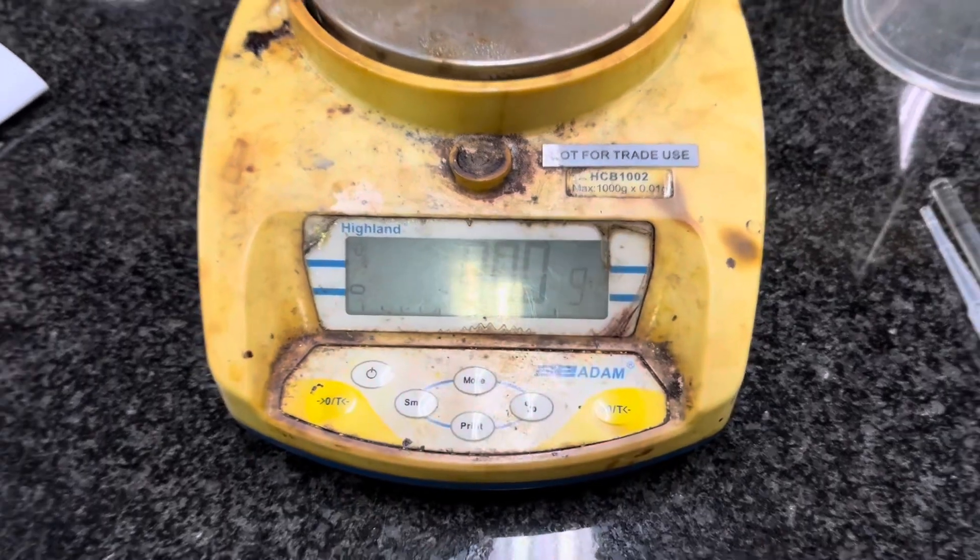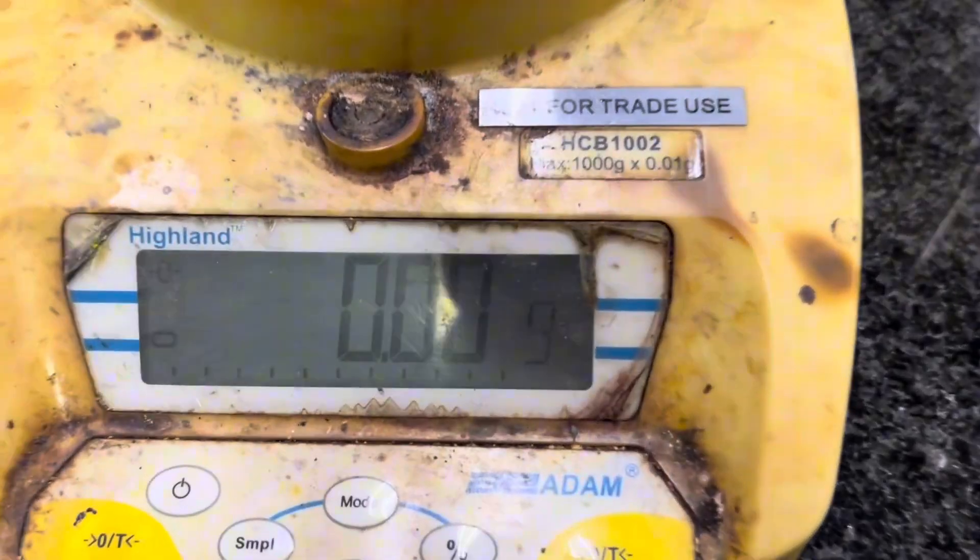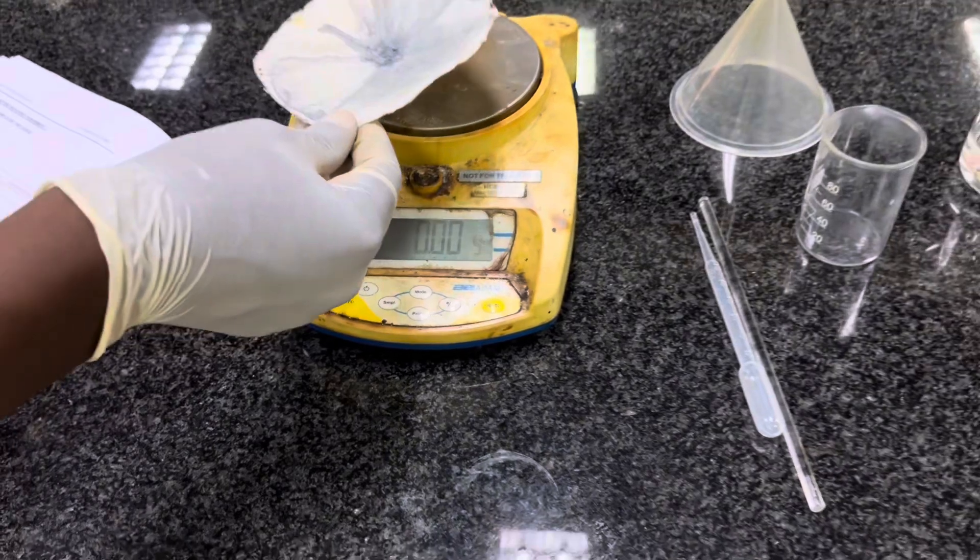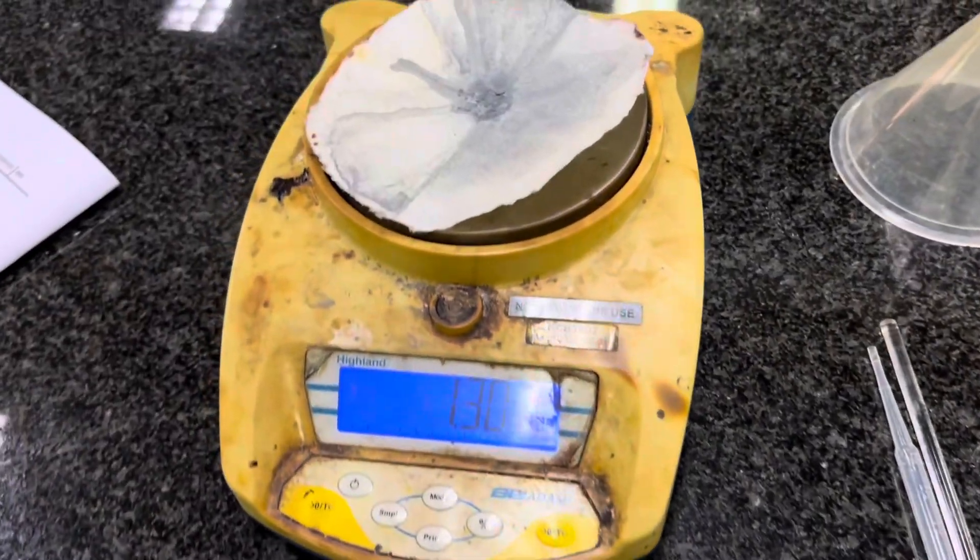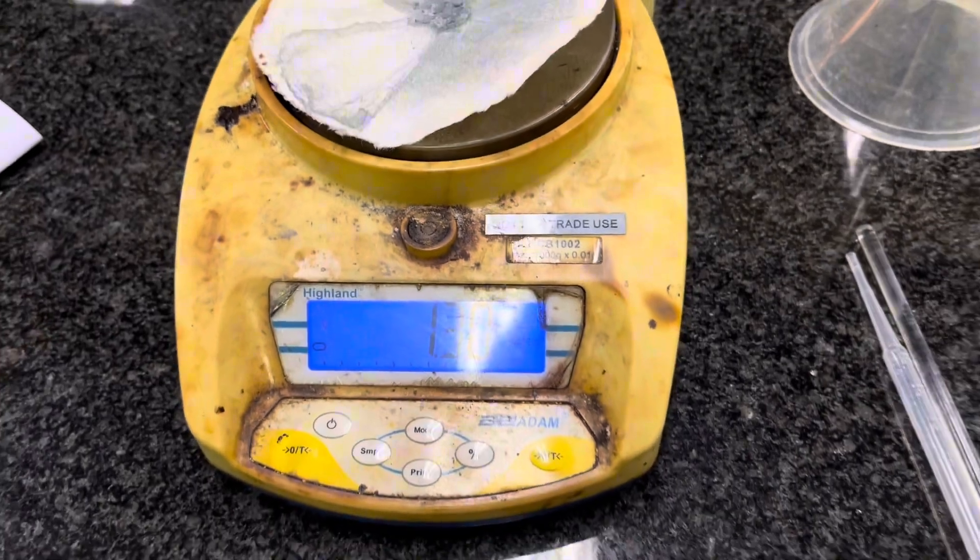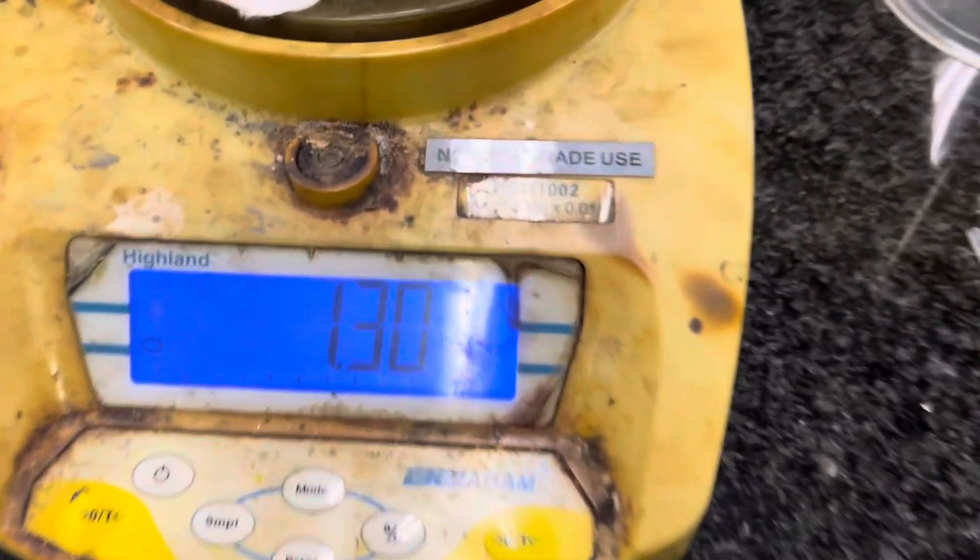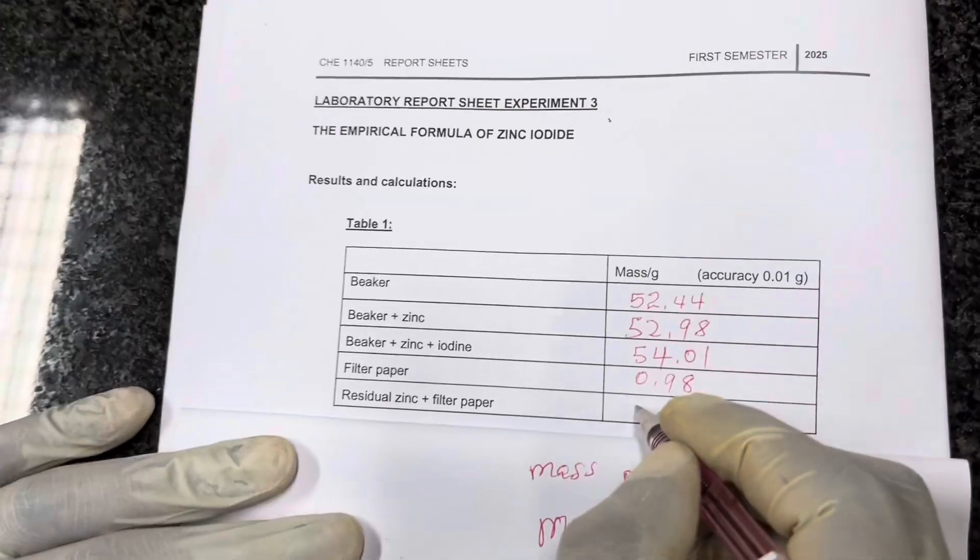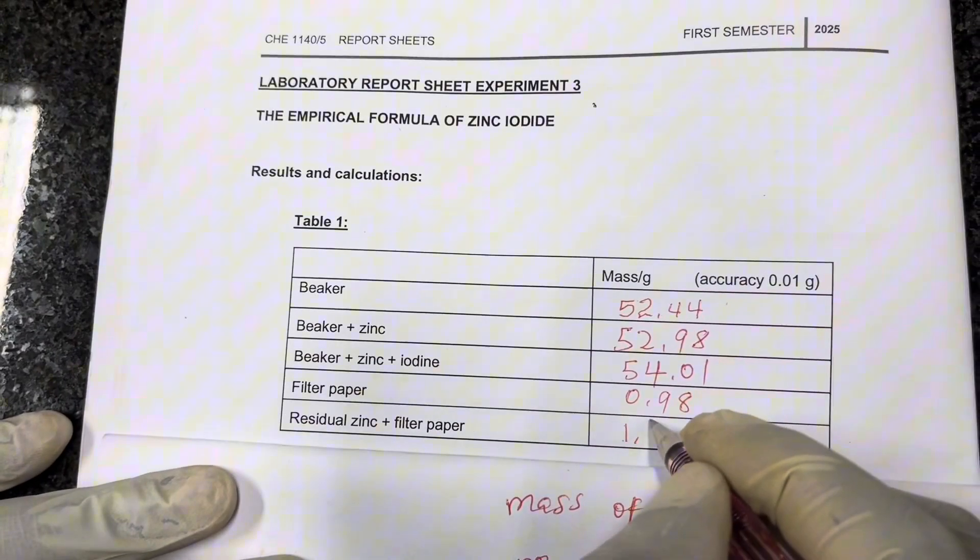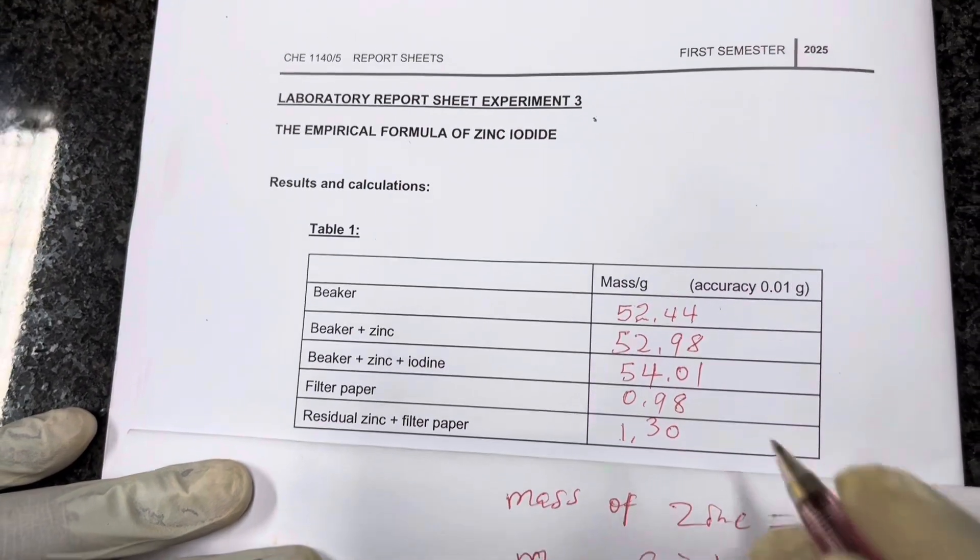So here it is. My weighing balance is at zero. I am about to weigh it. Now I weigh it. The mass was 1.30. That's what I got. 1.30. From there, I have to record it to say residual zinc plus filter paper. That's the mass. 1.30.